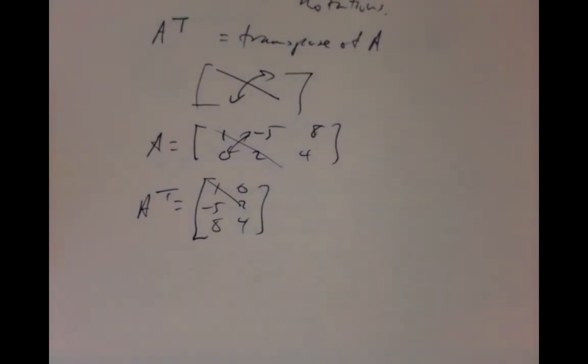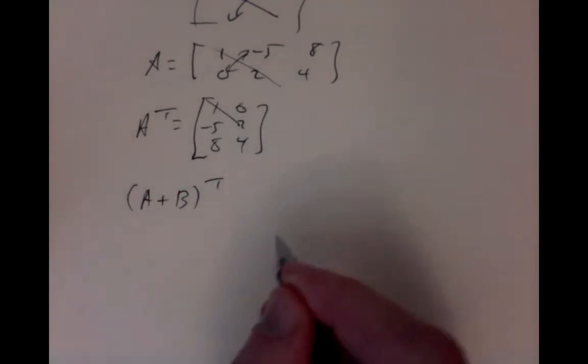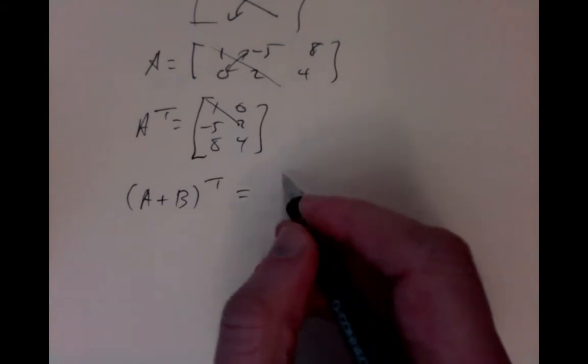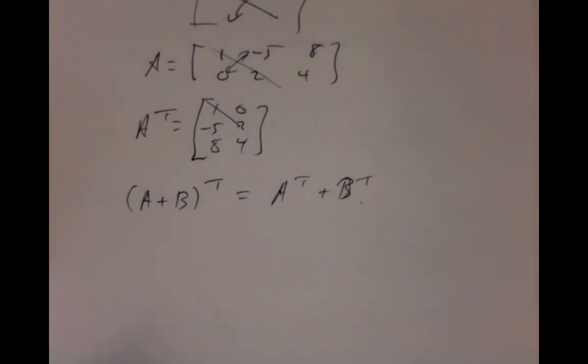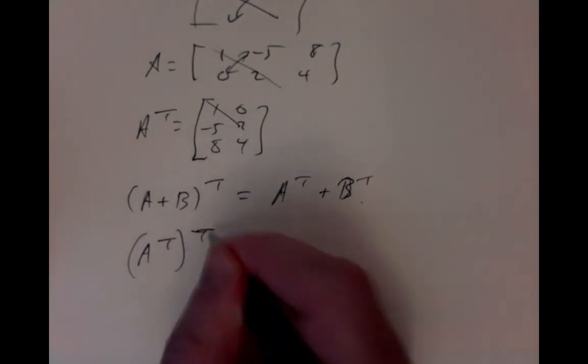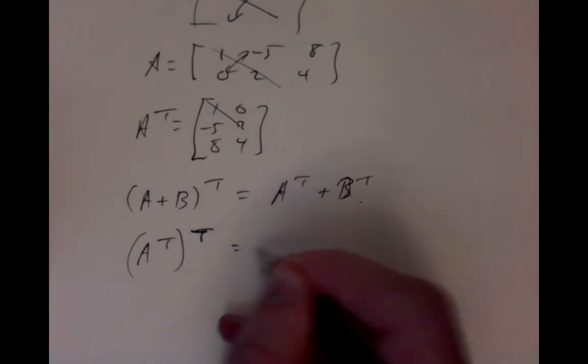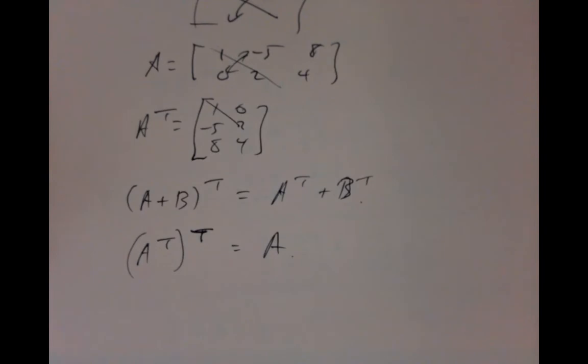And it has some obvious properties that if I add all the entries together and then swap which of the rows and columns, it's the same as if I swapped rows and columns first and then added the entries together. So some very elementary properties. Another obvious property is that if I swap which of the rows and columns and then swap again, then of course I get back to where I started from.